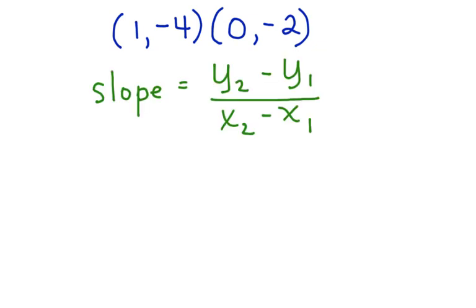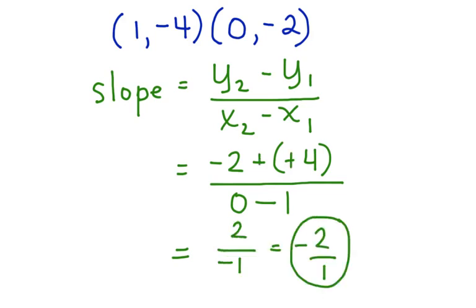Let's substitute the given values in for x and y. Here we have a negative 2 take away a negative 4 over 0 take away 1. Our slope is negative 2 over 1, or you could simply say negative 2.